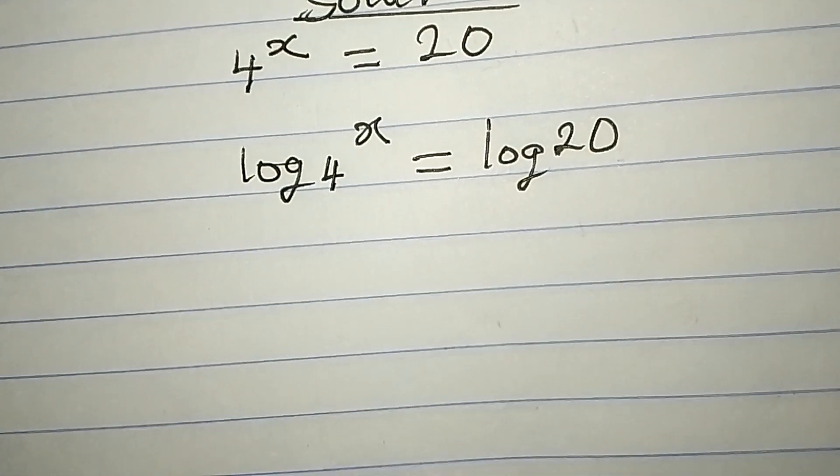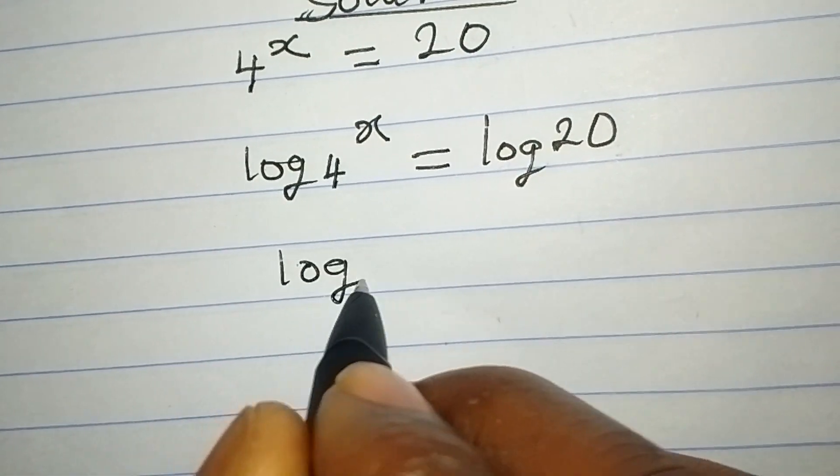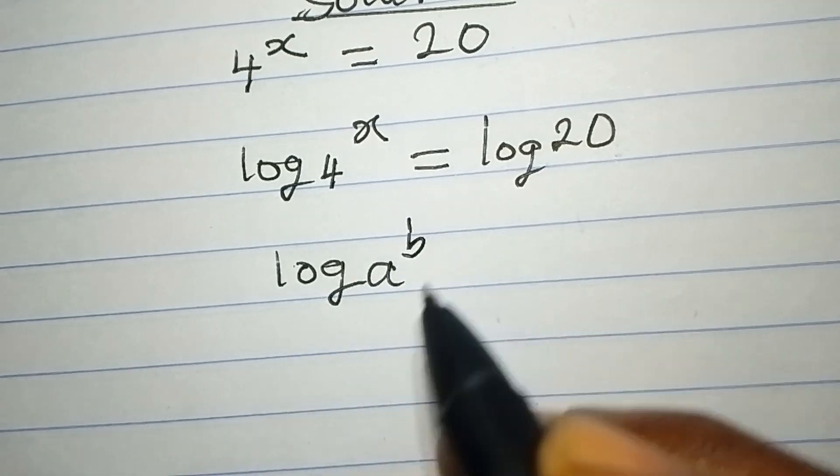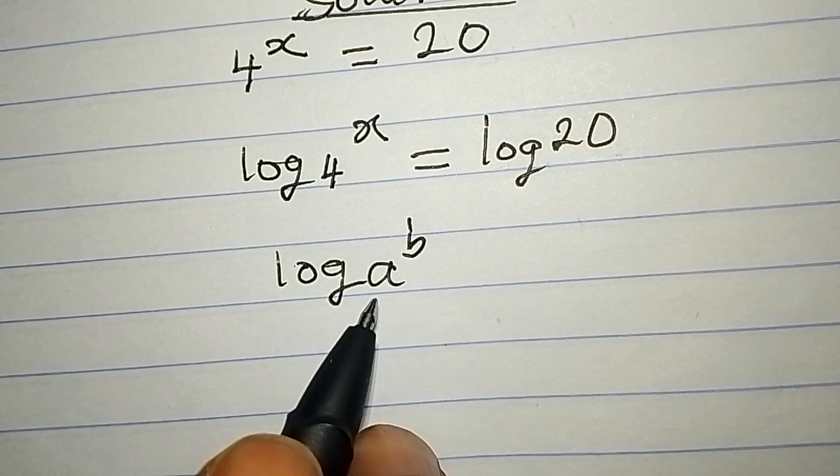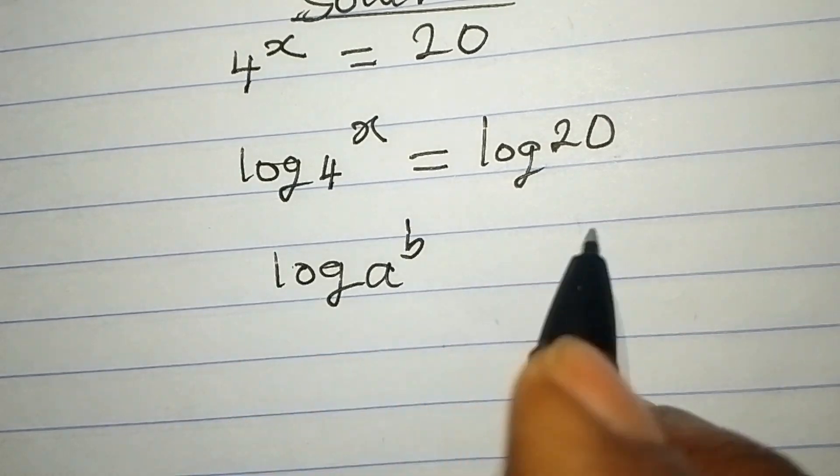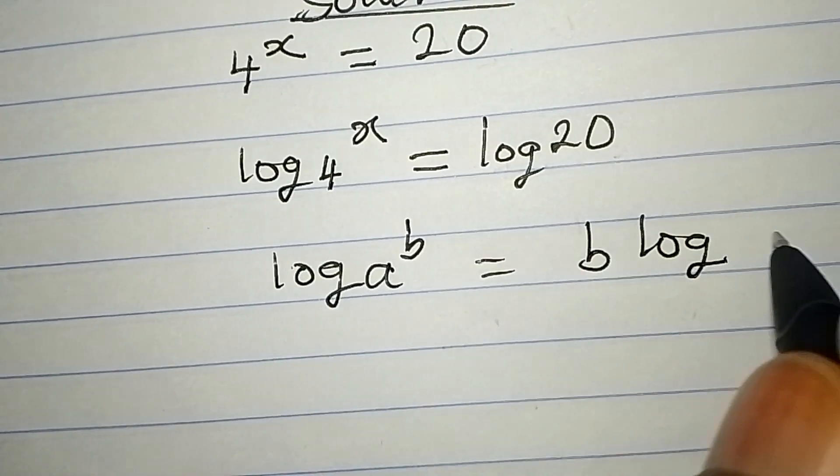Now there is a law that says log a to the power of b. Remember this a here is not the base. Log a to the power of b is equal to b log a.